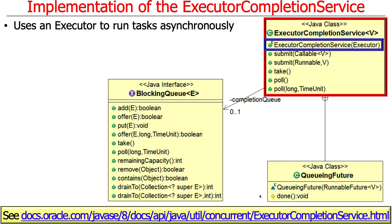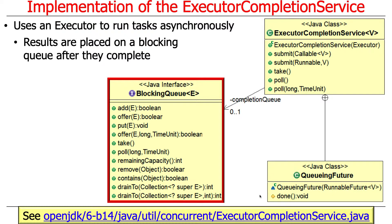The way this works under the hood is that an executor is used to actually run the tasks asynchronously. You can see that the ExecutorCompletionService takes an executor as one of its parameters. When the results are completed after the asynchronous operations run in the background, the ExecutorCompletionService implementation places the results on a blocking queue called the completion queue.